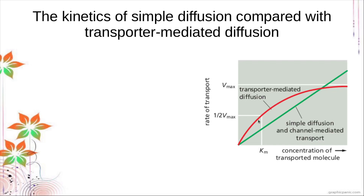After the break-even point, the transporter actually slows down and plateaus at larger concentrations because, like enzymes, there is only a certain amount they can accommodate at any given time. So that's their maximum amount.